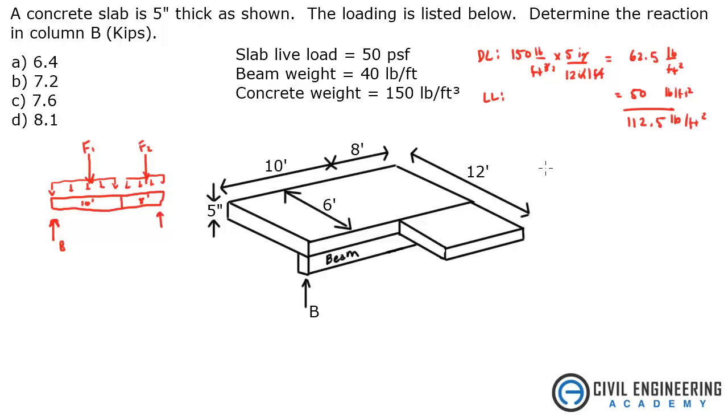First thing we need to look at is the 12 foot wide section. So basically we're going to take the 112.5 pounds per square foot, and we're going to multiply that by 12 feet, 12 feet wide. And don't forget to add the weight of the beam, plus 40 pounds per foot. So all of that equals 1390 pounds per foot. That's the 12 foot wide section.